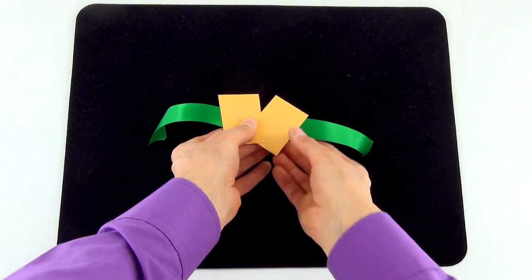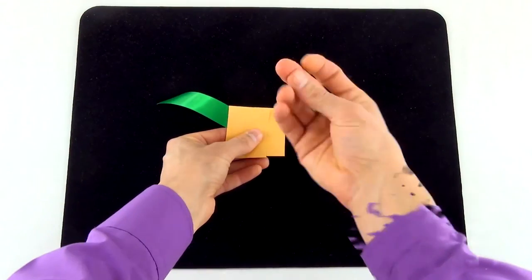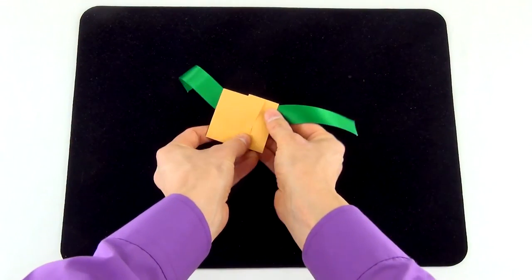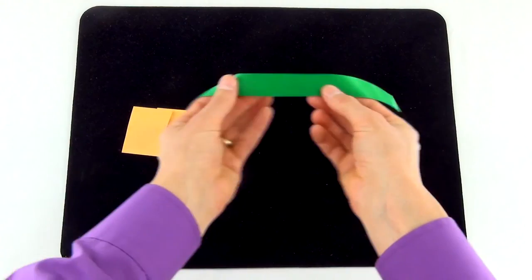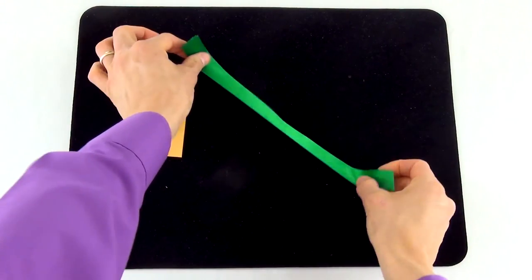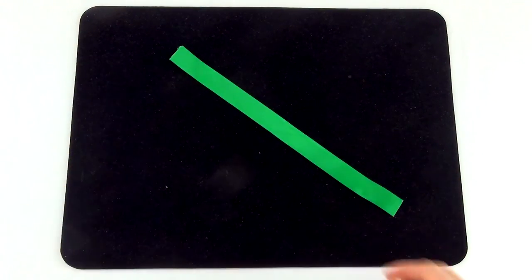All that's left to do is bring the envelope pieces back together, snap your fingers, and pull the ribbon free to show that it is once again in one piece. Discard the pieces of the envelope as you hand the ribbon out for examination.